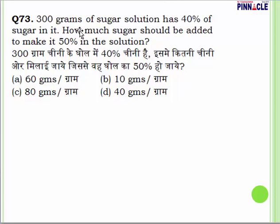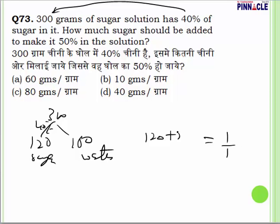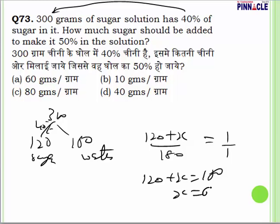Question number 73: 300 g of sugar solution has 40% sugar, meaning 120 g sugar and 180 g water. To make it 50% sugar (1:1 ratio), we need sugar = water = 180 g. So add 180 − 120 = 60 g of sugar. Answer is A, 60 g.